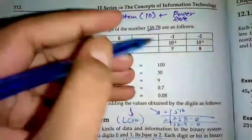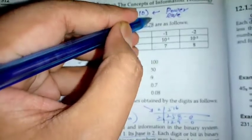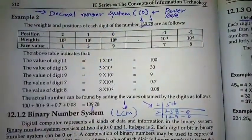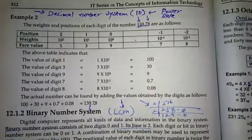For example, you have 139.78. You have this number, you want to change it into decimal number system.